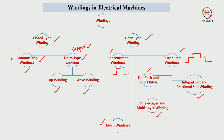Mush windings are generally utilized in low power machines where the coil length with respect to one coil side and the other coil side are different. For example, each coil is a combination of two conductors, and the length with respect to one coil side and the other coil side is different in mush windings. Only low power applications utilize it.